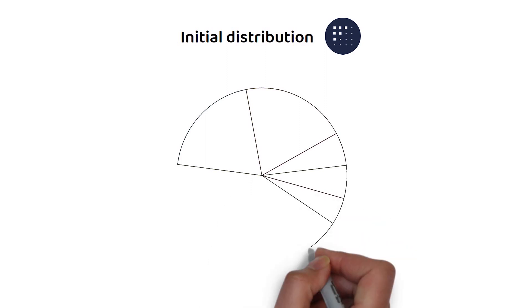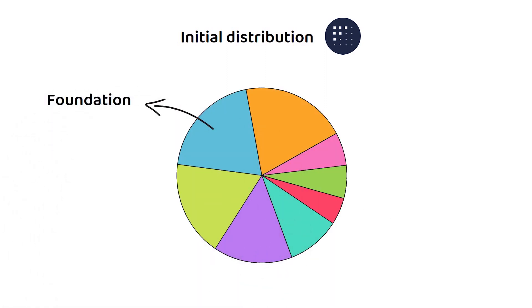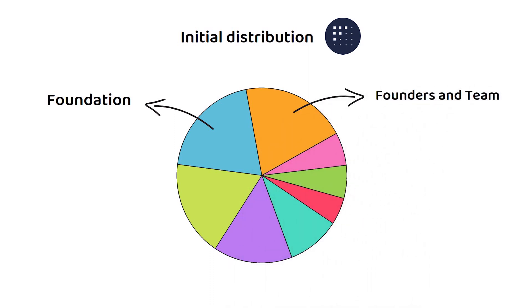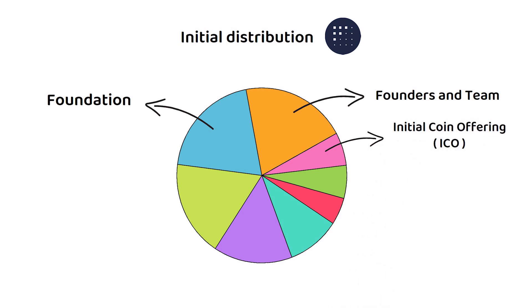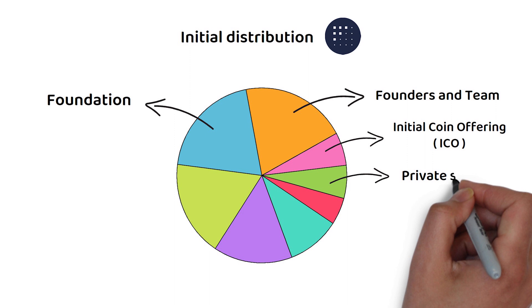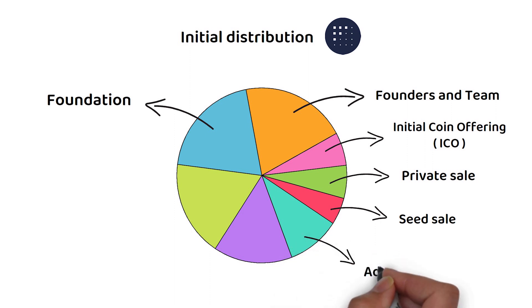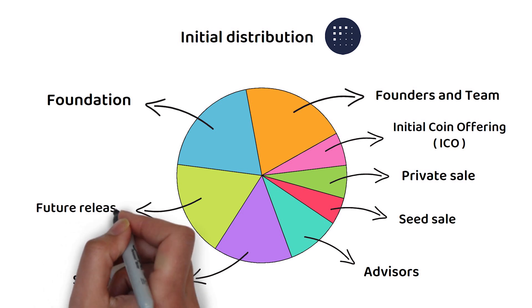Further, of the 1.15 billion, 20% went to the foundation that looks after the blockchain. A further 20% went to the founders and team. 6% was sold during a public ICO, and a further 6% was sold during a private sale. An additional 5% was also sold during a later seed sale. Advisors were given 10% and 15% was allocated for staking rewards. Lastly, around 18% of the FET tokens are being held for future releases.